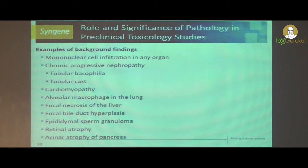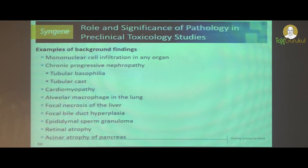Some examples of background findings: you can find mononuclear cell infiltration in each and every organ — you can see it in every pathology report, especially in the liver. Chronic progressive nephropathy is actually an age-related finding you can see in Sprague-Dawley rats most often in carcinogenicity studies. In shorter duration studies, you can see tubular basophilia or tubular casts, which eventually progress to chronic progressive nephropathy in extended duration studies.